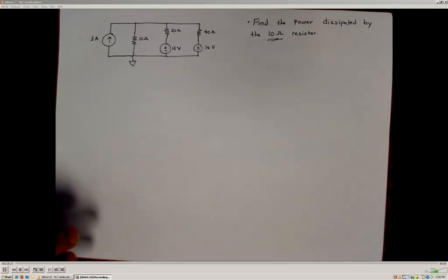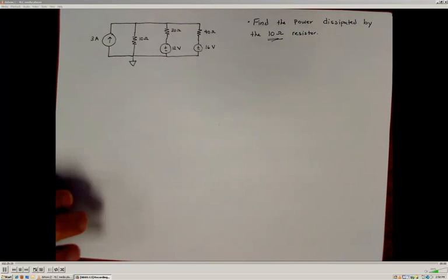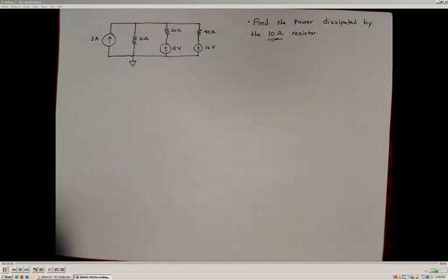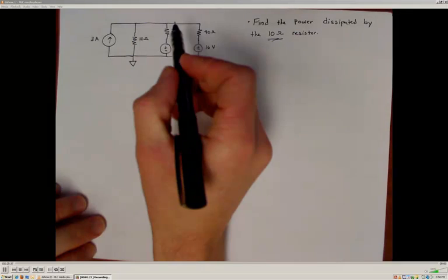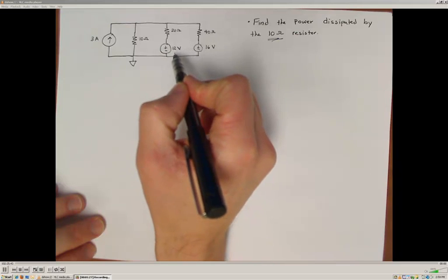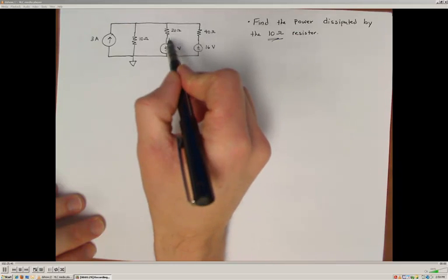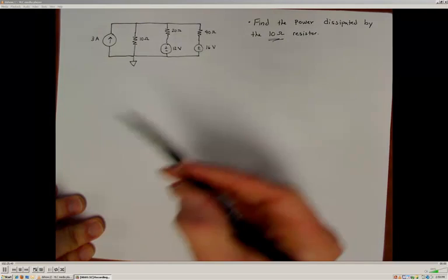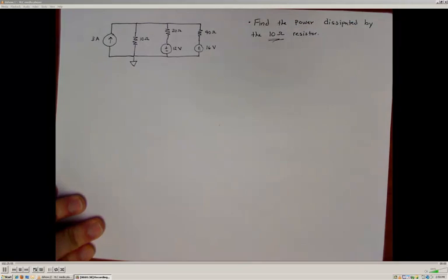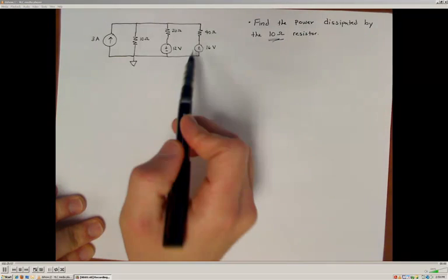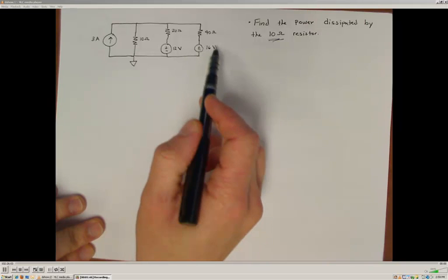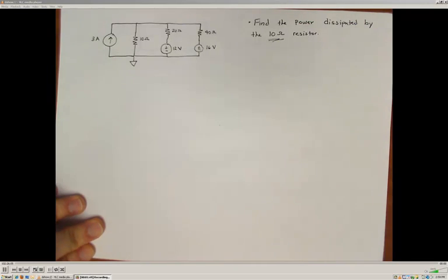The first thing I recognize is the equivalency between Thevenin and Norton circuits. I have a voltage supply in series with a resistive element — that's a Thevenin circuit. I also have another Thevenin circuit: a 16 volt supply in series with a 40 ohm resistor. Both of these are connected at a specific node, so I'm going to use the source transformation method to transform both of them into Norton equivalents.